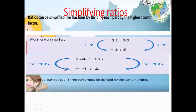Another example: 64 to 16. Sixty-four divided by 16 equals 4. Sixteen divided by 16 equals 1. So 64:16 simplifies to 4:1. Note: we can simplify using a smaller factor first, but we must ensure the result is in its simplest form when finished.